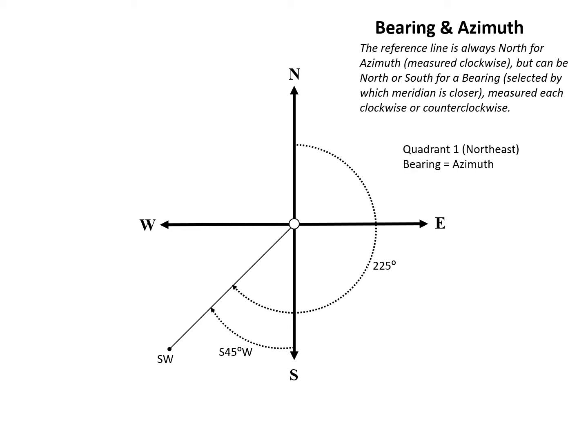In quadrant one, the northeast quadrant, the bearing is equal to the azimuth.